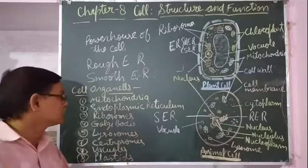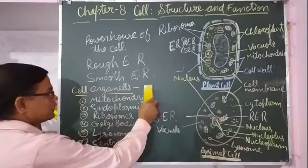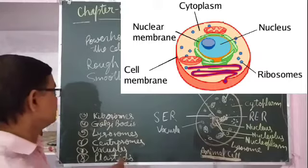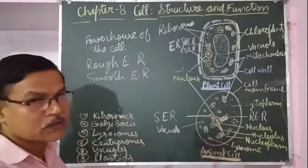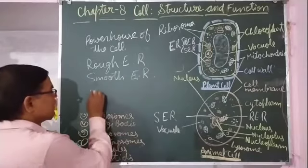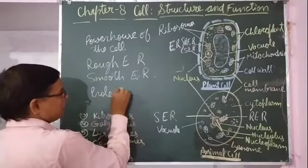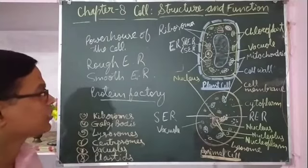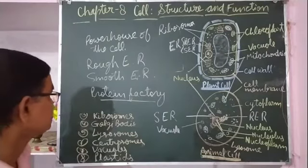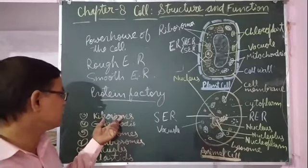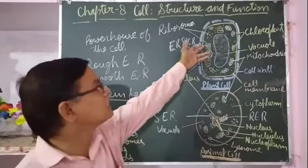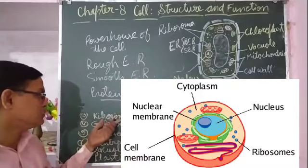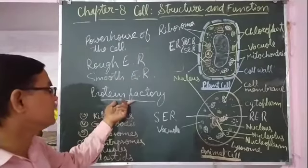The next organelle is ribosomes. Ribosomes are small granular structures present in the cytoplasm. They help in the synthesis of protein, that is why ribosomes are also called the protein factory of the cell. They are present on the endoplasmic reticulum and also in free state in the cytoplasm, and their function is synthesis of protein.